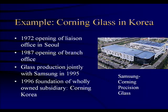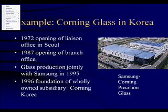Here's an example: Corning Glass operations in Korea. Samsung Corporation of Korea makes flat panel displays using Corning Glass. A joint venture was created between Samsung and Corning called Samsung Corning Precision Glass. That production started jointly with Samsung in 1995, and the importance of controlling the technology behind flat panel glass was such that Corning decided to buy out Samsung's share in the joint venture to make it into a wholly owned subsidiary called Corning Korea.